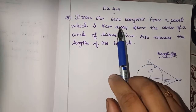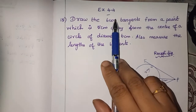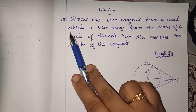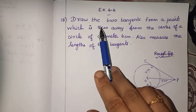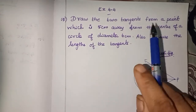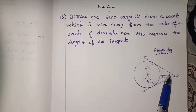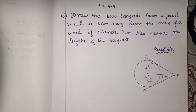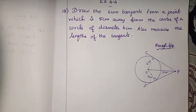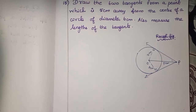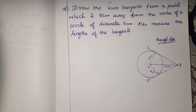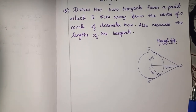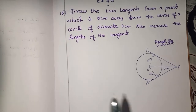Now we are going to see exercise 4.4, 15th sum. Construction of pair of tangents from an external point. Already we have seen two sums based on this concept. Now, 15th sum.